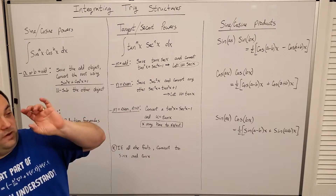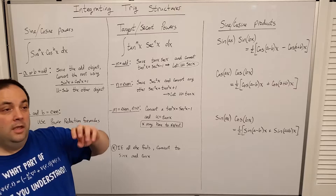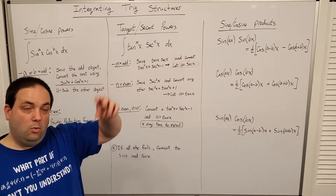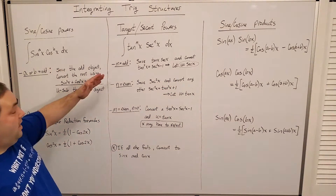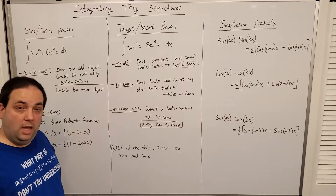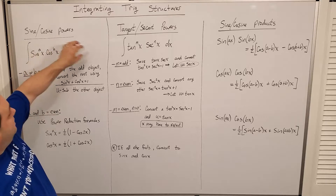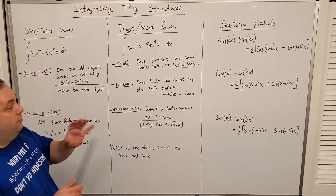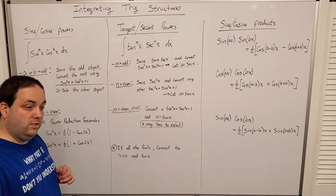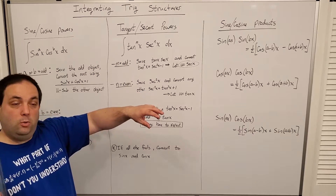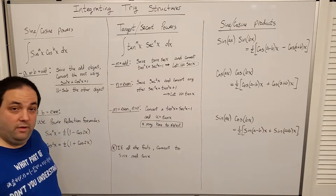Whichever one is odd, you take one of those pieces and save one. So if sine is odd, take one of those sines — not the whole grouping — and save one for your substitution. Then you let u equal cosine, and you can do a substitution, or vice versa. If either one of them is odd, take that odd extra out and do some conversions, converting all of the other sines into cosines so that everything works out.